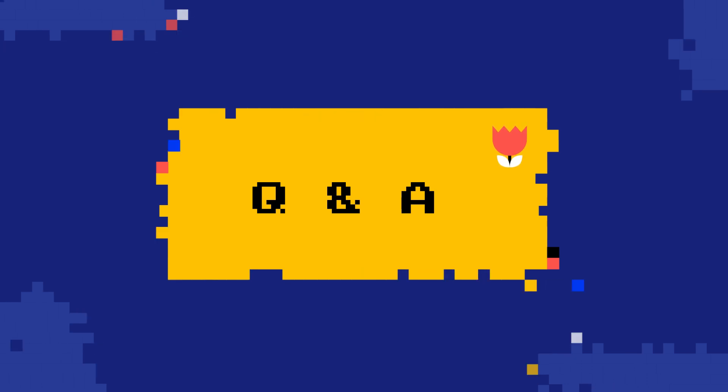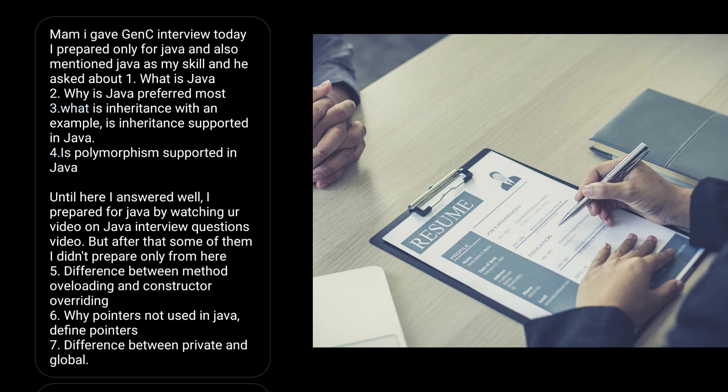Let's get started. Starting with an MCA student — his interview started like this: he prepared only for Java and also mentioned Java as his skill. They asked him what is Java, why is Java preferred, what is inheritance with an example, is inheritance supported in Java, and is polymorphism supported in Java. Up to this point he answered well, having prepared from Java interview questions videos.